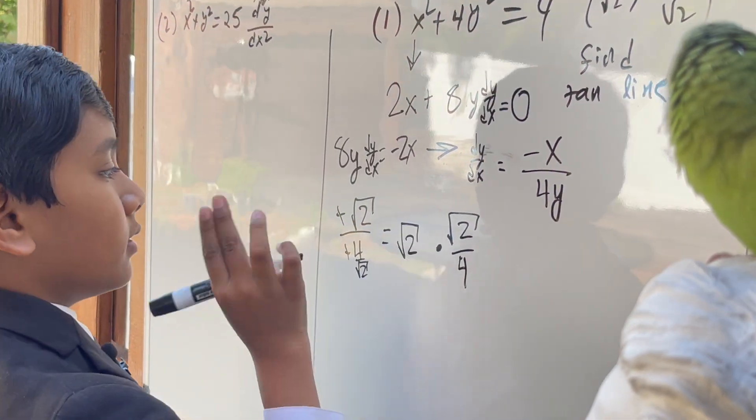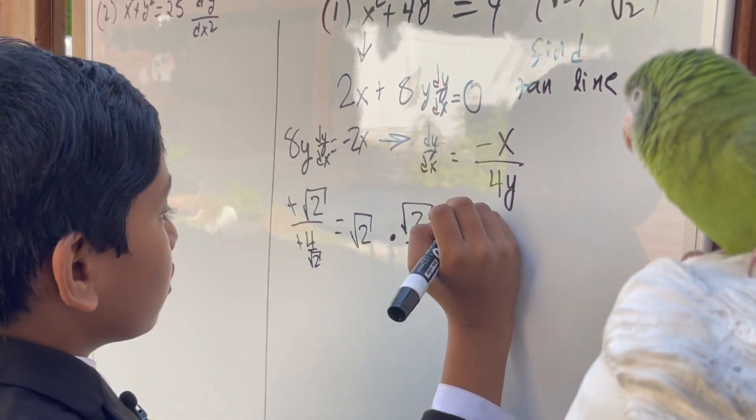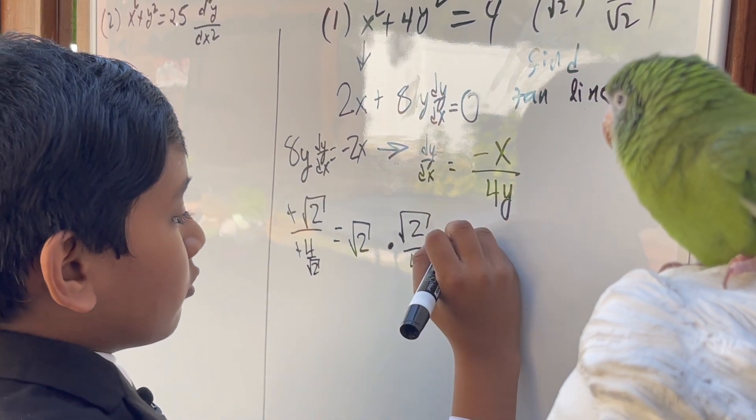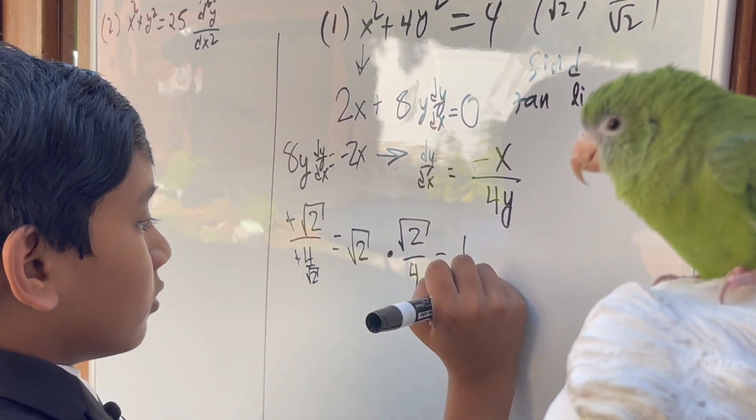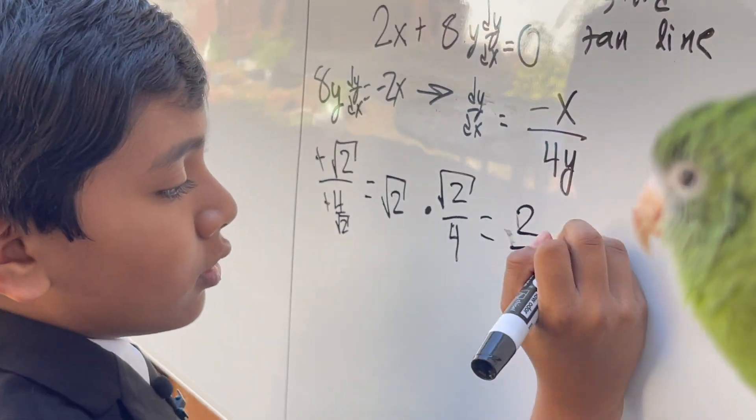Wait. Yeah. So, this is finally equal to 1/2. How? Well, this becomes 2/4, so that's 1/2.